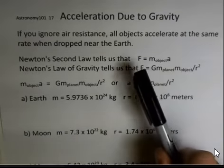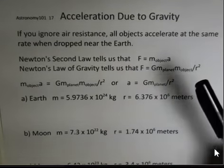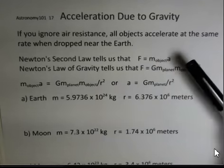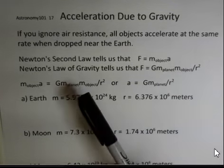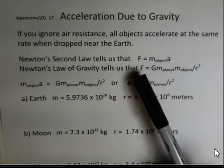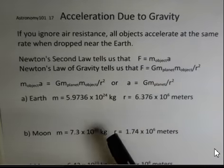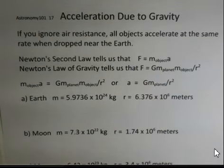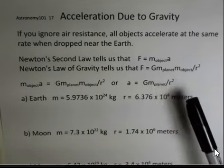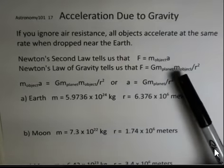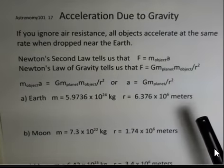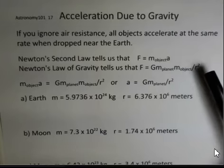Newton's second law says that the net force on the object equals the mass of the object multiplied by its acceleration. And Newton also developed the law of gravity, that the force of gravity between two objects would be the gravitational constant G times the mass of the planet and the mass of the object, divided by the distance squared.